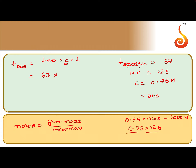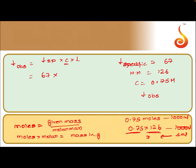Concentration here should be mass per ml. Moles into molar mass will give you mass in grams. So, 0.75 moles into 126 is present in 1000 ml. In 1 ml, the concentration in gram per ml will be 0.75 into 126 divided by 1000, which equals 6.33.